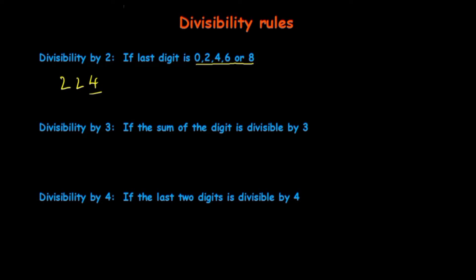So what we learn from the divisibility rule by 2: if the last digit of the number ends with 0, 2, 4, 6, or 8, the number is divisible by 2. For example, 2020 has last digit 0, so it is divisible by 2. Similarly, 576 is also divisible by 2 because it has 6 in the units place.